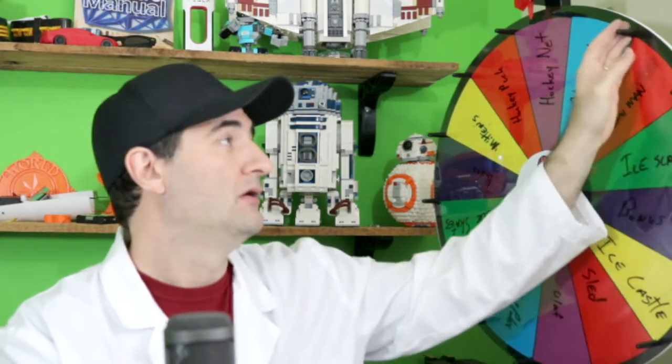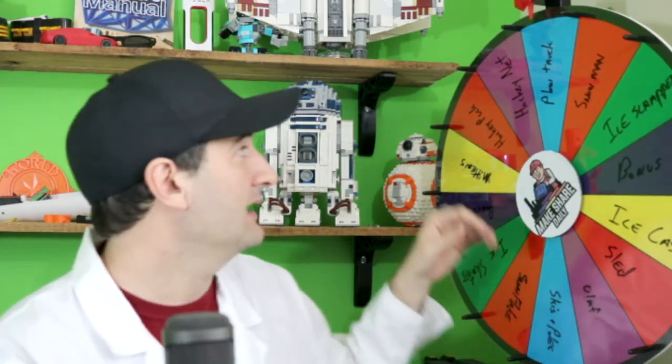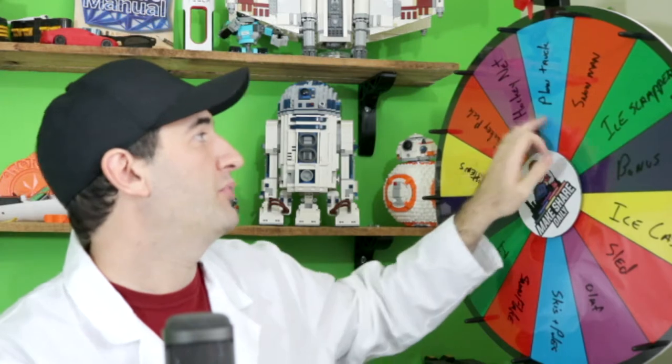So a hockey net, that was a cool build. Now we've got to spin the wheel and find out what we're going to build tomorrow. Now we've got nothing but snow and ice and winter sports on the board and let's see what we got today.